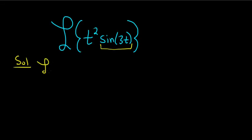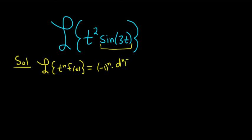If you have the Laplace transform of t to the n times f of t, where f is something you can compute — you can compute the Laplace of little f — this is equal to negative 1 to the n times the nth derivative of big F with respect to s. And here big F of s is equal to the Laplace transform of little f.